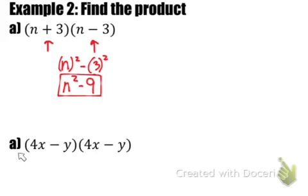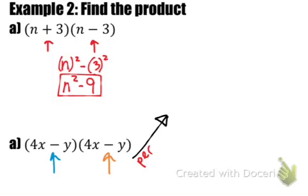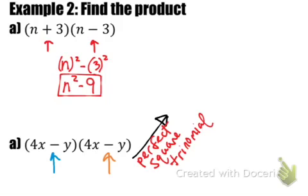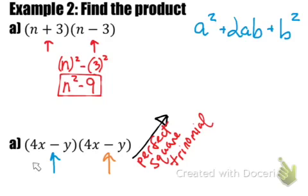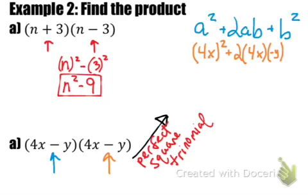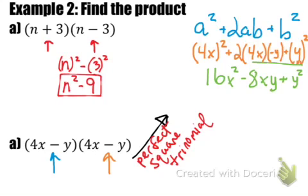For example b, looking at the two binomials — they're exactly the same. You know what this is called: a perfect square trinomial! So right away, writing it out using a squared plus 2ab plus b squared, our a would be 4x and our b would be negative y. Recognizing the pattern makes multiplication much quicker — you can just fill it right in and you're done.